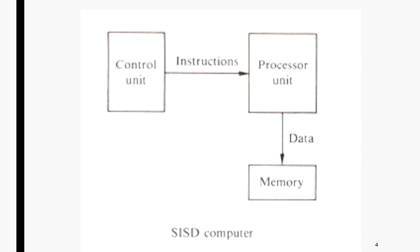Now we will discuss each architecture. SISD — Single Instruction Single Data stream — is one of the traditional architectures. In the diagram you can see there is a processor unit; the input comes from the control unit and the output is sent to the memory. There is only one instruction stream and only one data stream, making it one of the oldest and most traditional parallel computer architectures.